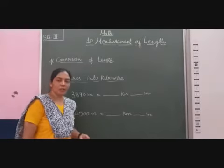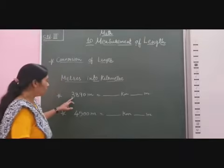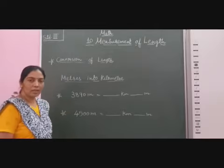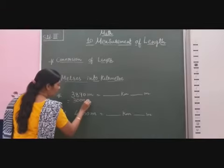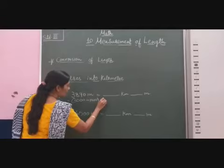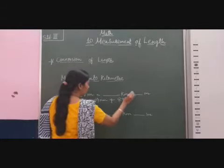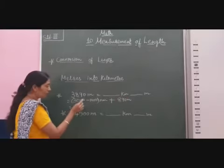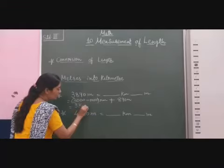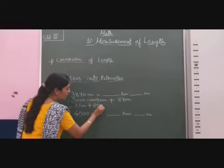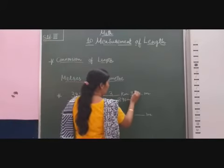The next question is: 3890 meters is equal to blank kilometers and blank meters. We separate here — the thousands from the hundreds, tens, and ones. So 3000 divided by 1000 kilometers plus 890 meters equals 3 kilometers. The answer is 3 kilometers and 890 meters.